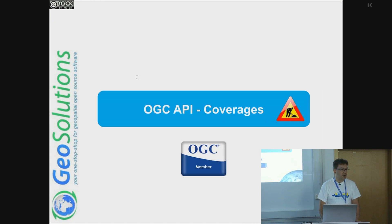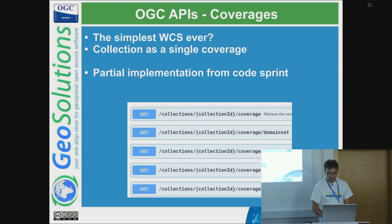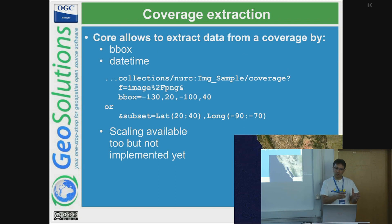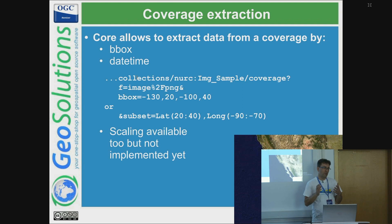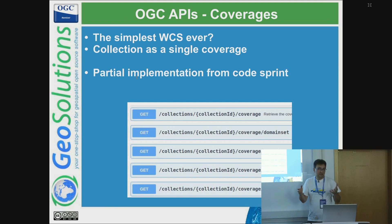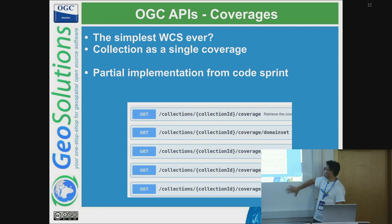OGC API Coverages is a work in progress, both at the specification level and the GeoServer implementation level. It could be thought of as the simplest WCS ever. It was partially implemented during an OGC API code sprint. The idea is that you take a collection, that collection is a coverage, and you have a few sub-resources describing the coverage content: the coverage itself (all data and metadata), the domain set (the spatial component), the range type (the description of bands, their type, how many, etc.), the range set (the pixels), and the metadata. When you merge these together, you get the coverage output as GeoTIFF or whatever format you choose.